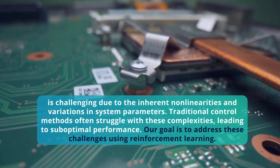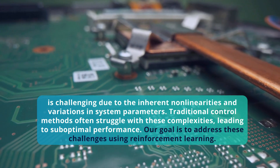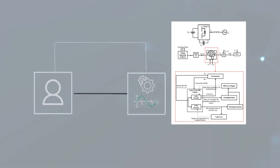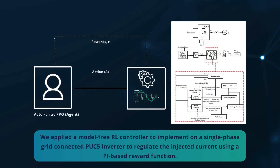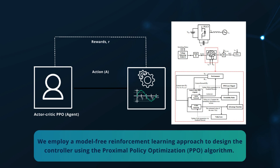Our goal is to address these challenges using reinforcement learning. We applied a model-free RL controller on a single phase grid connected PUC5 inverter to regulate the injected current using a PI-based reward function. We employ the proximal policy optimization (PPO) algorithm to design the controller.